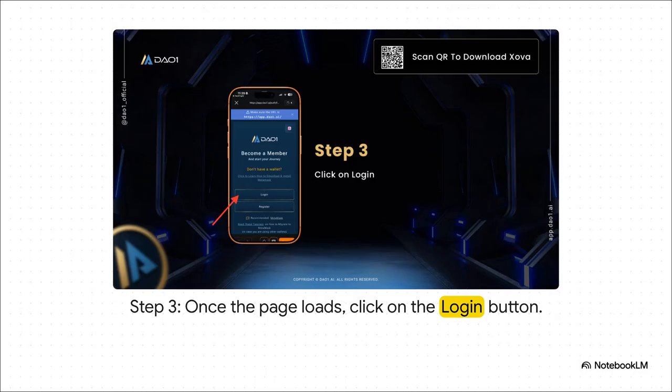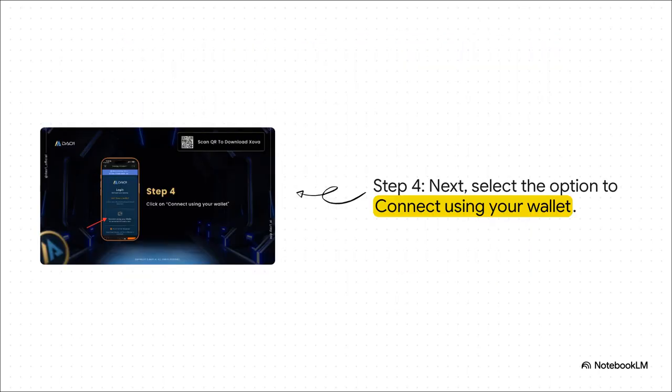Once that DAO1 page pops up, you're going to see a couple of options. The one we're looking for is that big clear login button — go ahead and click that to move on. This next screen is all about how we're going to log in. Since we're using XOVA, you'll want to pick connect using your wallet. This is pretty much the standard way you'll link up with most decentralized apps these days.